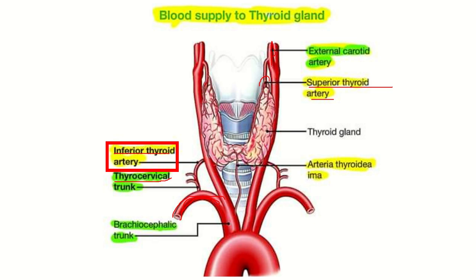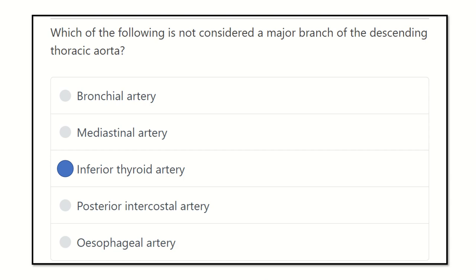The inferior thyroid artery arises from the thyrocervical trunk, which is a branch of the subclavian artery. Another artery supplying the thyroid gland is the thyroidea ima artery, which arises from the brachiocephalic trunk. So the thyroid gland is supplied by the superior thyroid artery, inferior thyroid artery, and the thyroidea ima artery.